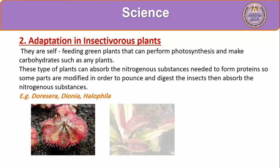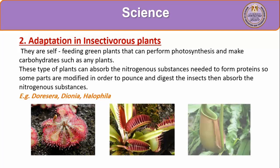Examples of insectivorous plants include Drosera, Dionaea, and Halophylla. In the Dionaea plant, when an insect enters the leaf and touches the sticky substance inside, the leaves close on the insect. Then the plant digests the insect to obtain the nitrogenous substances needed to form proteins.